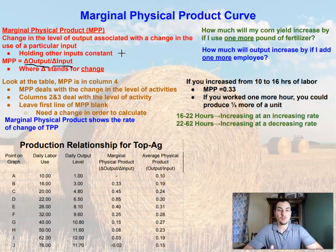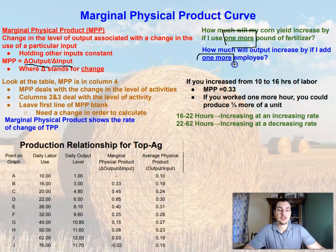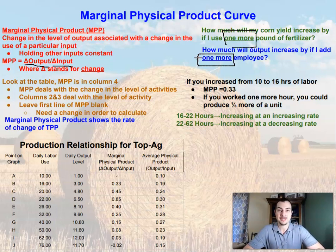Why do we even care about the marginal physical product? The marginal physical product answers questions like: how much will my corn yield increase if I use one more pound of fertilizer? How much will output increase if I add one more employee? How much will the total pounds gained by my livestock increase if I increase their feed ration by one more pound? We're looking at how one more unit of a certain input is going to affect output.